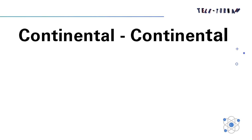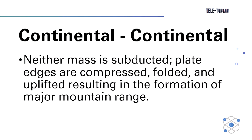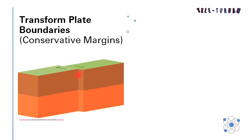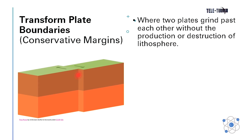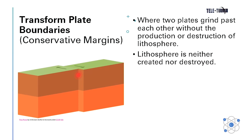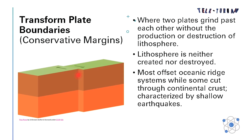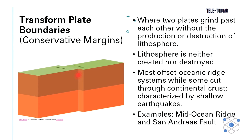Lastly, we have continental to continental: neither mass is subducted. Plate edges are compressed, folded, and uplifted, resulting in the formation of a major mountain range. Examples are the Himalayas and Alps. Third, we have transform plate boundaries, also called conservative margins, where two plates grind past each other without the production or destruction of lithosphere. Lithosphere is neither created nor destroyed. Most offset oceanic ridge systems, while some cut through continental crust, characterized by shallow earthquakes. Examples are the Mid-Ocean Ridge and the San Andreas Fault.